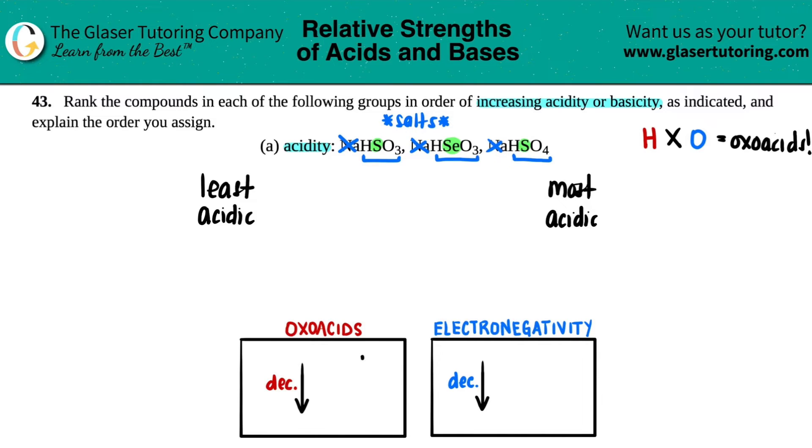Sulfur is up top here and then selenium is down here. So let's see, as we go from top to bottom our acidity will decrease. That means that all the selenium ones are going to be less acidic than the sulfur ones.